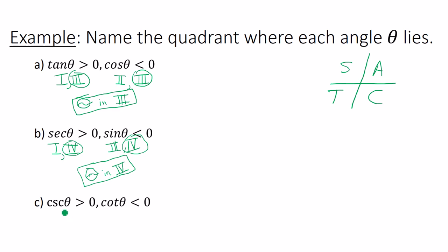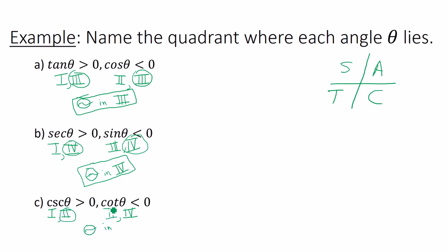Last exercise: where is cosecant positive but cotangent negative? Cosecant and sine are reciprocals, so cosecant is positive in quadrants 1 and 2. Cotangent is negative in quadrants 2 and 4 — not in 1 or 3 where it's positive. The quadrant they have in common is quadrant 2, so theta is in quadrant 2.